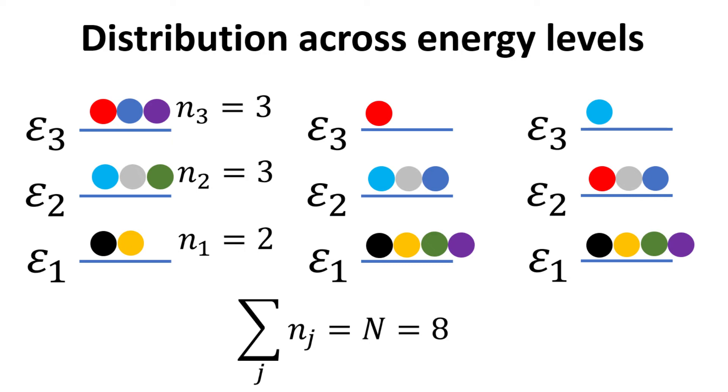The second system shows a different way of distributing the number of particles. In the system on the right, we simply swap the red and cyan particles as compared to the middle system. These two configurations are distinct because the particles are distinguishable.